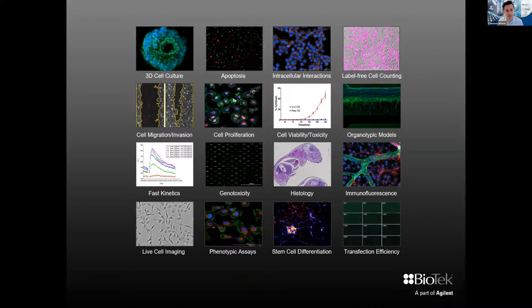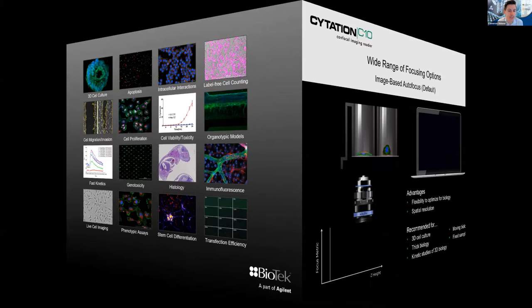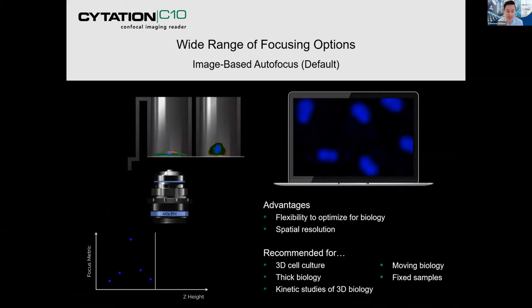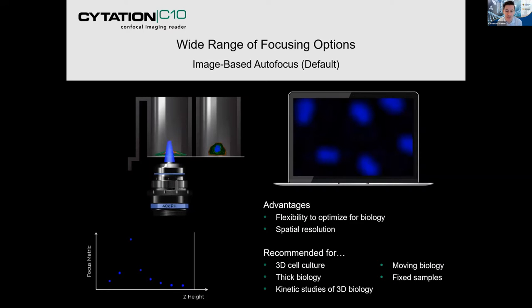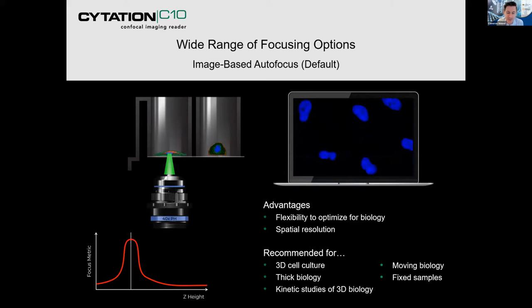With all of those options, you can expand and deal with a lot of different experiments — from 3D cell culture through to histology and stem cell differentiation. We have two range of focusing options. The first is an image-based autofocus, which is the default in the instrument. Its advantage is flexibility to optimize for biology and spatial resolution.